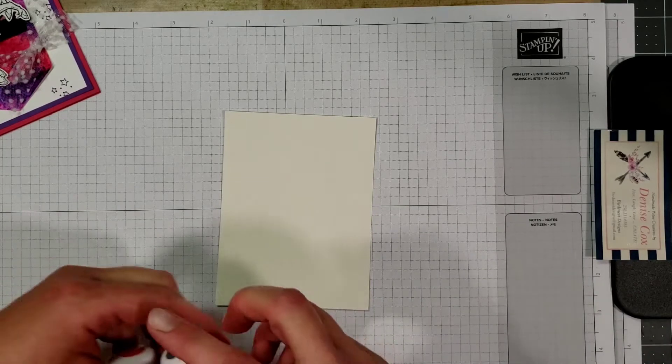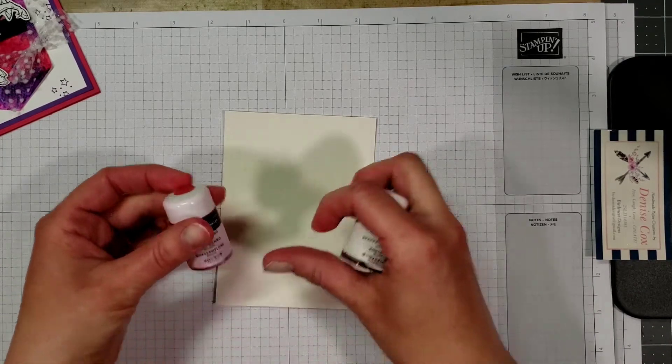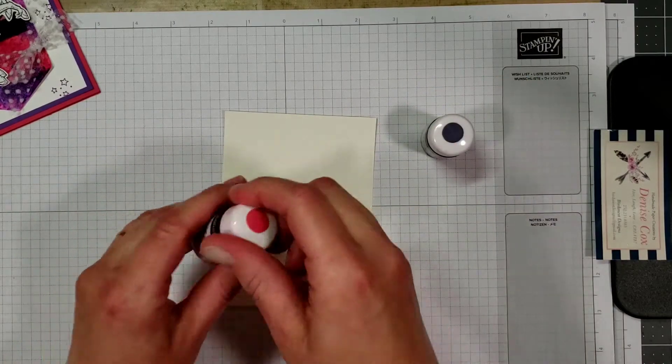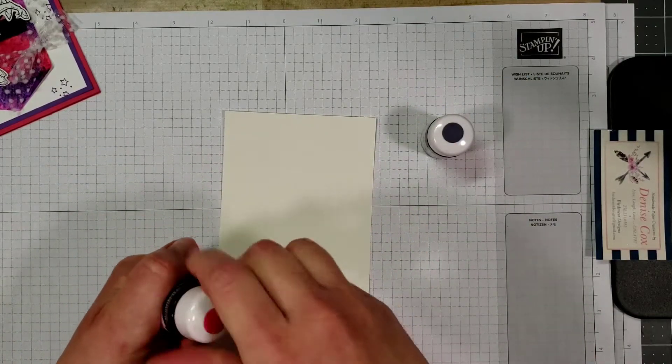We're going to use melon mambo and gorgeous grape pigment sprinkles and a little of this goes a long ways.